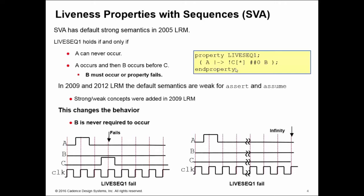It cannot fail if A never occurs. But if A does occur, there's two ways in which this can fail. Either we have C occurring before B, and that's this case here.